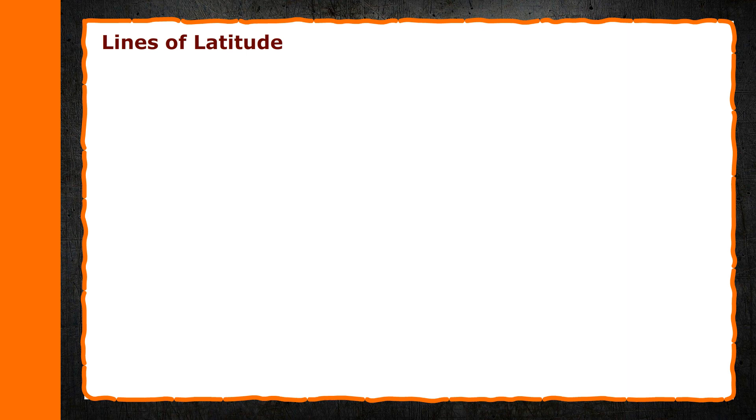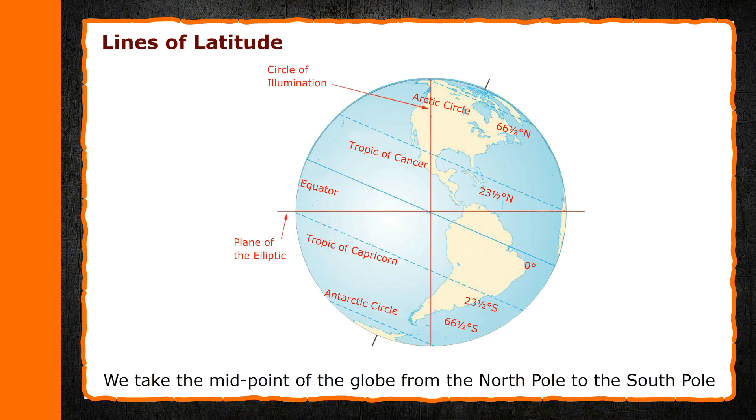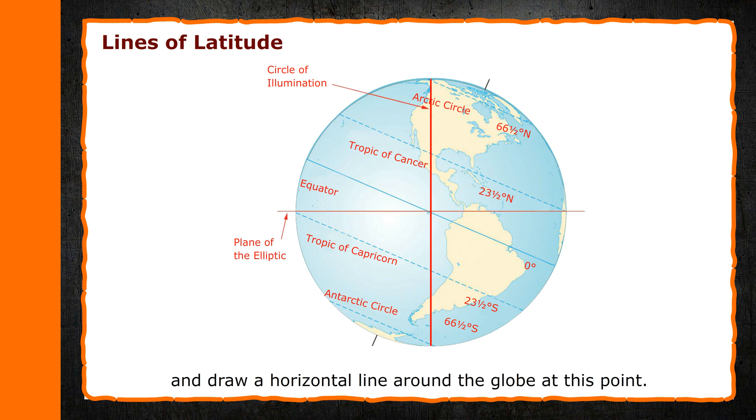Lines of Latitude. We take the midpoint of the globe from the north pole to the south pole and draw a horizontal line around the globe at this point. This line divides the globe into two equal halves. This line is called the equator. The upper half of the equator is called the Northern Hemisphere and the lower half of the equator is called the Southern Hemisphere. Now we can draw parallel equidistant lines at a distance of 1 degree towards the north and south from the equator. These lines are called the lines of latitude.